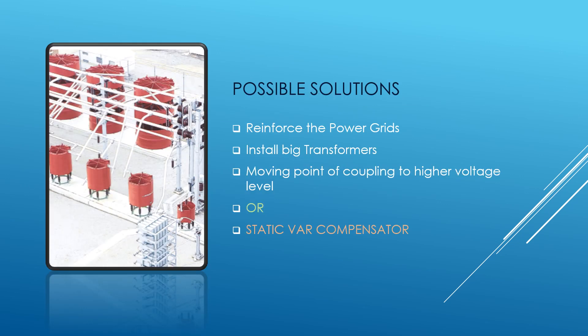For these disturbances, what are the possible available solutions? One way to deal with the problem is to reinforce the power grid by building new transmission lines, installing new and bigger transformers, or moving the point of common coupling to a higher voltage level. But such measures are expensive and time-consuming, and in some cases almost impossible.